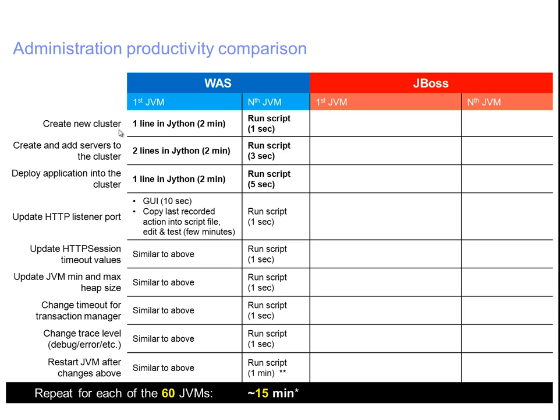As you have seen, for a single JVM or even multiple JVMs it takes just a couple of lines in Jython to deploy an application, create a cluster, or create servers. When you run it for 60 JVMs it will be very fast because it's a scripted deployment. When you want to provision a new cluster with a new application and custom properties for 20 machines in your cloud with 60 JVMs, the entire task will probably take about 15 minutes - maybe less, maybe more depending on the speed of your servers.